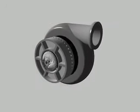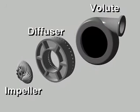A centrifugal compressor has three basic components: an impeller, a diffuser, and a volute casing.